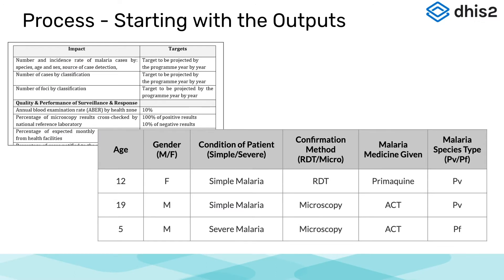By reviewing the indicators and outputs that need to be created routinely in a malaria program, we can better understand how the variables on the data collection tools contribute to the required outputs, and therefore identify the minimum data inputs required to make the use case work in DHIS-2. For example, if we take one of the indicators available within our documentation — incidence rate of malaria cases by species — we can clearly see that there is a malaria species type field on the data collection tool, which contributes to the calculation of this indicator.